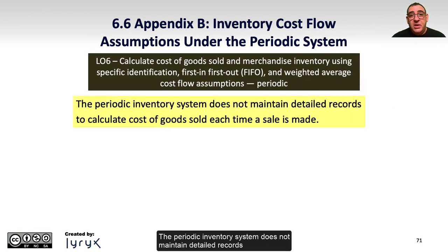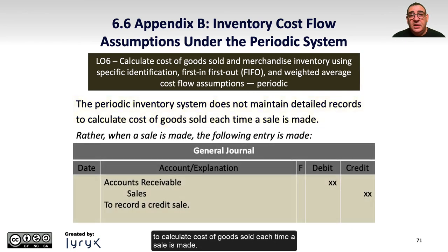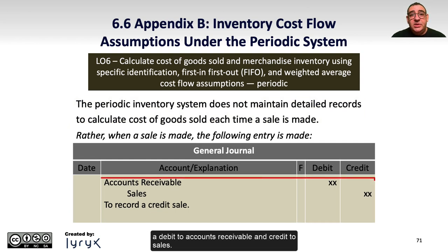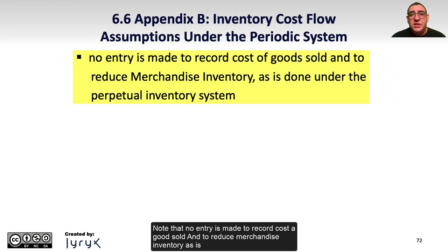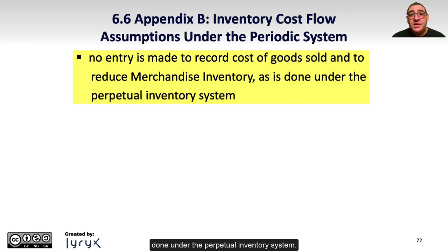The periodic inventory system does not maintain detailed records to calculate cost of goods sold each time a sale is made. Instead, when a sale is made, this journal entry is made where there is a debit to accounts receivable and a credit to sales. Note that no entry is made to record cost of goods sold and to reduce merchandised inventory, as is done under the perpetual inventory system.